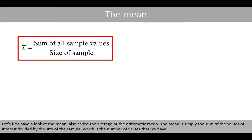Let's first have a look at the mean, also called the average or the arithmetic mean. The mean is simply the sum of the values of interest divided by the size of the sample, which is the number of values that we have.